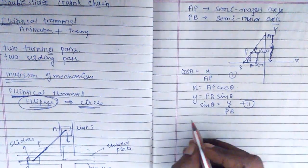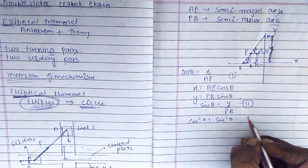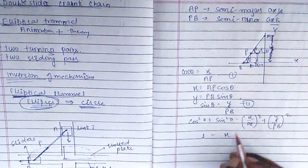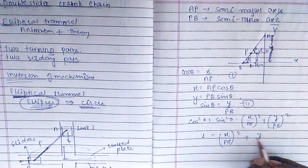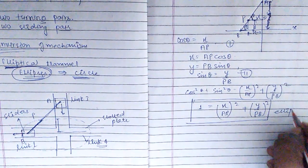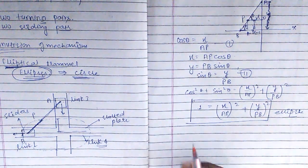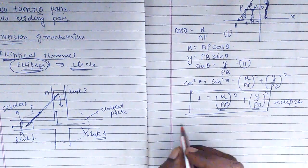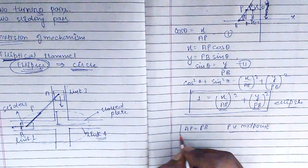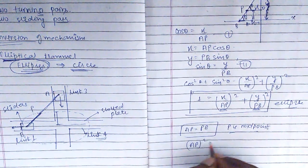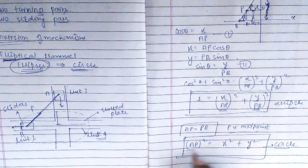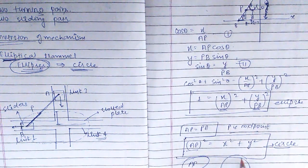We now have two equations. Squaring both and adding them: cos²θ + sin²θ = (x/AP)² + (y/PB)² = 1. This is the standard equation of an ellipse. Now if AP equals PB — that is, P is the midpoint — then the equation becomes x² + y² = AP², which is the standard equation of a circle with radius AP. By doing this, we could draw a circle using the elliptical trammel method.